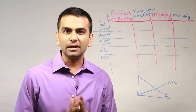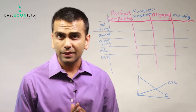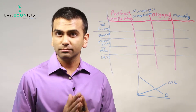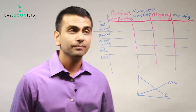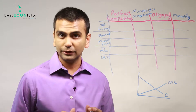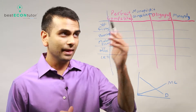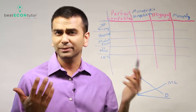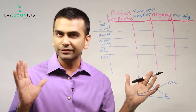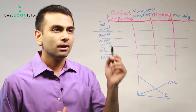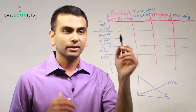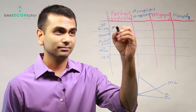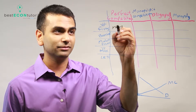Let's take a minute to think about the big picture. There are four types of market setups that we learn about in economics: perfect competition, which we learned about first, then monopolies and oligopolies, and now monopolistic competition. The number of firms in perfect competition is high — many firms, in theory infinitely many if needed.